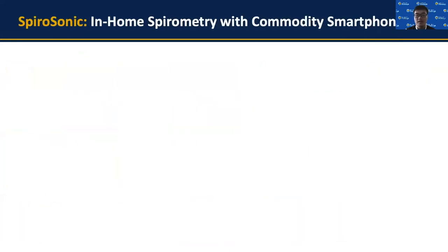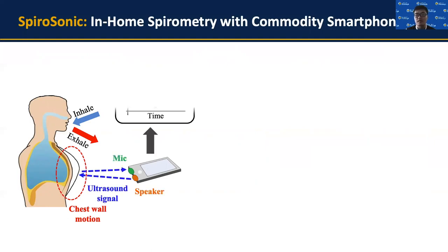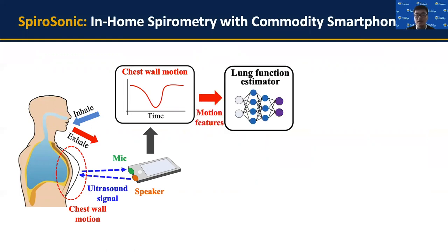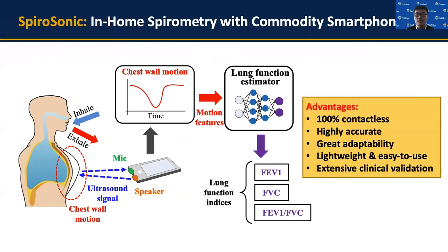To address all these limitations, we propose Spirasonic, which enables accurate, adaptive, and reliable in-home spirometry with commodity smartphones. When a patient is doing a spirometry test, Spirasonic mimics an active sonar system that tracks chest motion using an ultrasound signal transmitted and received by the smartphone. From this motion, Spirasonic extracts specific features that correlate to lung function indices, then estimates those indices using neural network regression. Spirasonic is 100% contactless and very easy to use, highly accurate, adapts to different human factors and dynamics in home settings, and its functionality has been clinically validated through an extensive clinical study.